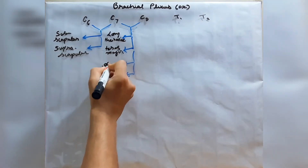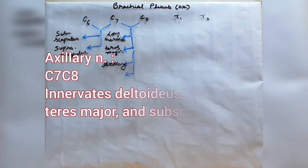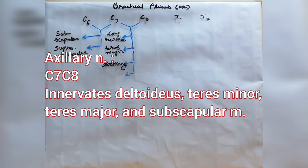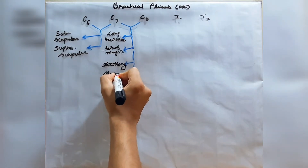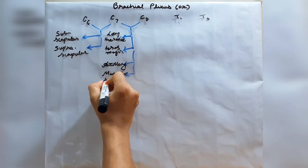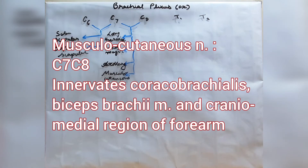The third nerve from C7 and C8 is the axillary nerve, which innervates the deltoideus, teres minor, teres major, and subscapular muscles. The fourth and last is the musculocutaneous nerve, which innervates the coracobrachialis, biceps brachii muscles, and the cranial medial forearm region.